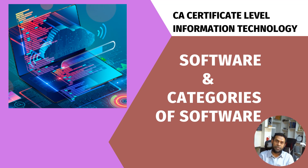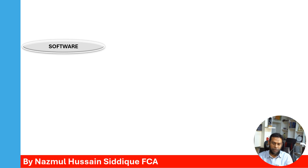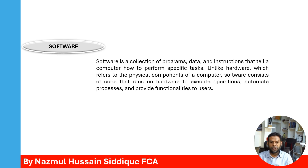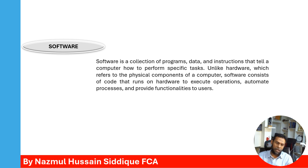This episode will cover software and the categories of software. Software is a collection of programs, data and instructions that tell a computer how to perform specific tasks. Unlike hardware, which refers to the physical components of a computer, software consists of code that runs on hardware to execute operations, automate processes and provide functionalities to users.